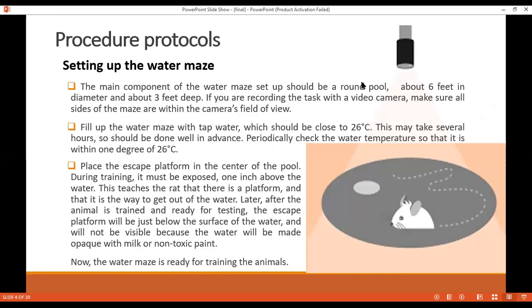The main component of the water maze setup should be a round pool, which will be 6 feet in diameter and 3 feet deep. We will incorporate the camera so the task will be recorded. The water temperature should be 26 degrees Centigrade or close to 26 degrees Centigrade. In addition, we will incorporate two platforms - one hidden and one which we can visualize.